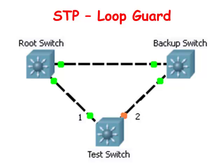Spanning tree relies on the continuous sending and receiving of BPDUs. The designated port transmits BPDUs and the non-designated port receives BPDUs. When one of the blocking ports in a physically redundant topology no longer receives BPDUs, spanning tree will conclude that the topology is loop free at that port. Eventually the blocking port will move itself into the forwarding state, and this situation creates a switching loop.